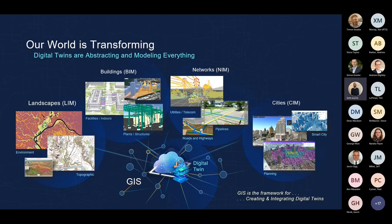There's a whole multitude of information models, including landscape information models, building information models, network information models, and city information models — but that could also be campus or facility information models, anywhere where you've got a concentration of your asset portfolio. Foundational to all of these information models is geography — that common canvas. GIS is that overarching framework which enables us to create and integrate information models into spatially enabled digital twins.